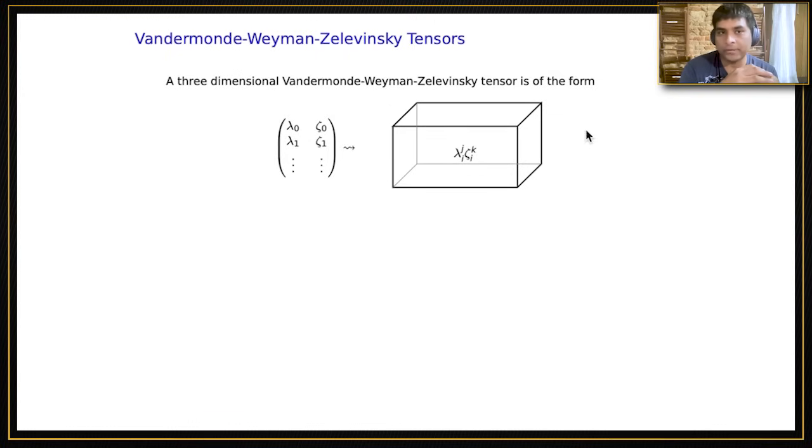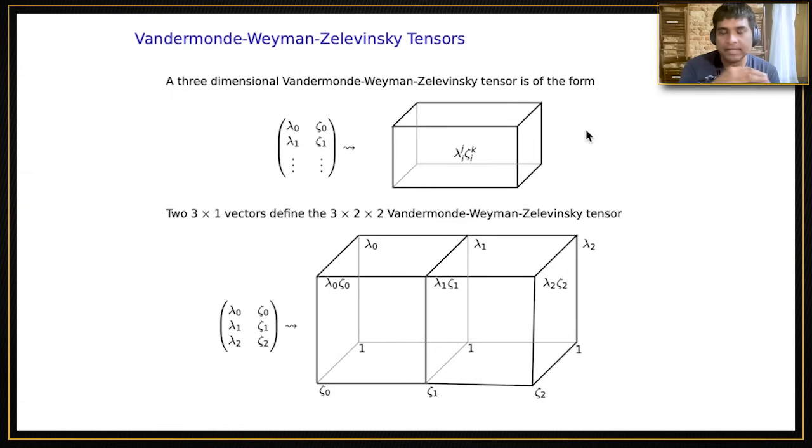These tensors have a lot of magic to them. If the notation is confusing, I've written out a very small example. It's just another tensor with a lot of algebraic structure, where all elements are derived from two vectors. Another thing to note is that one of the dimensions, the x dimension, is roughly equal to the length of the other two. I will always have x to be the larger dimension, about twice the length of y and z. These Vandermonde-Weyman-Zelevinsky tensors are critical ingredients in our construction.